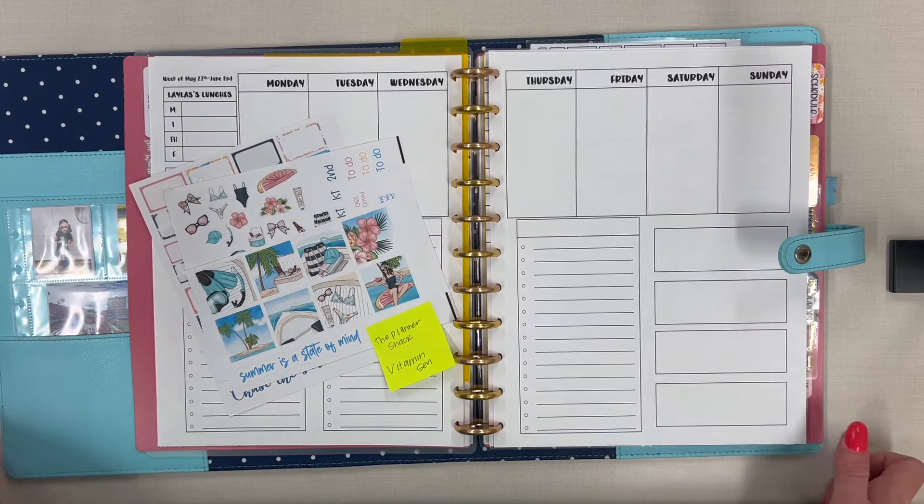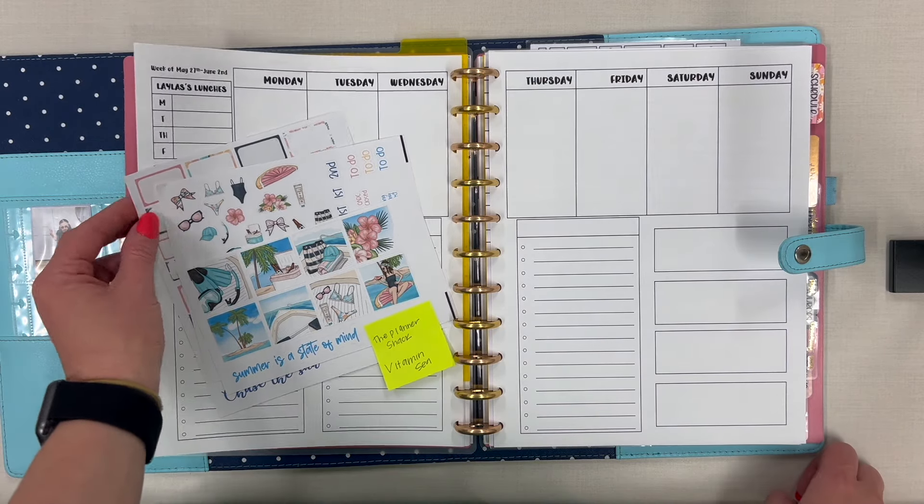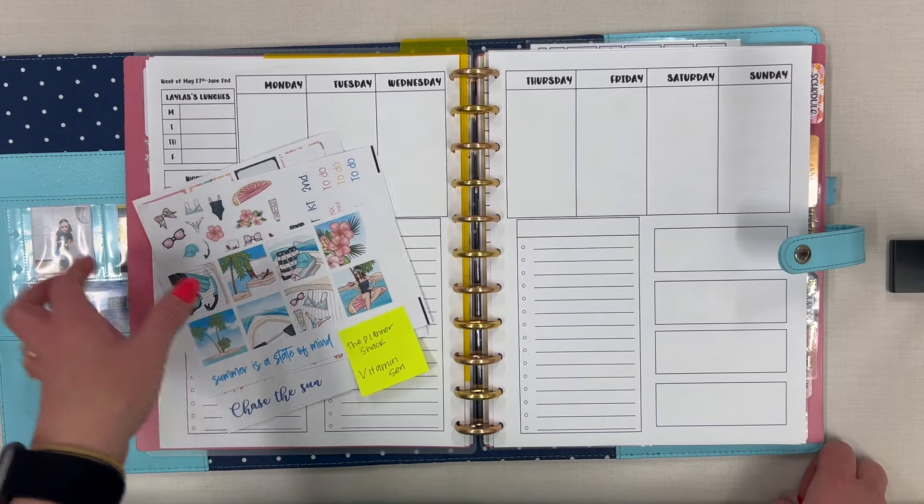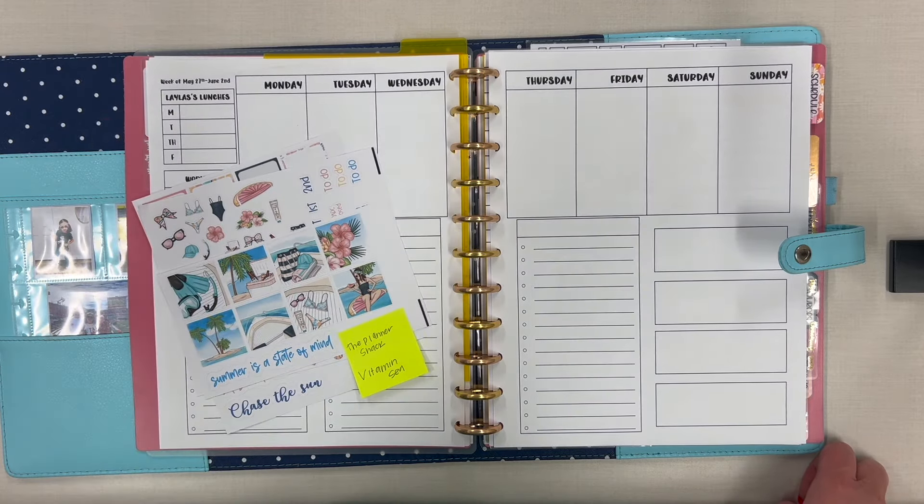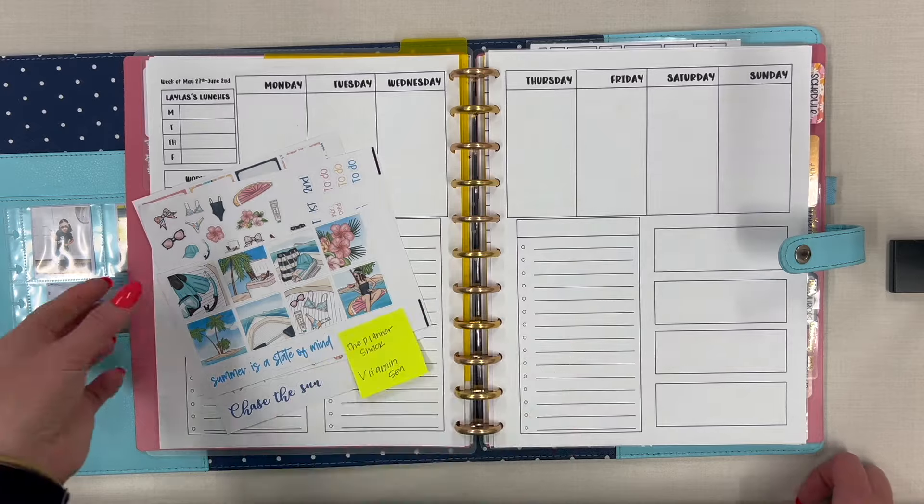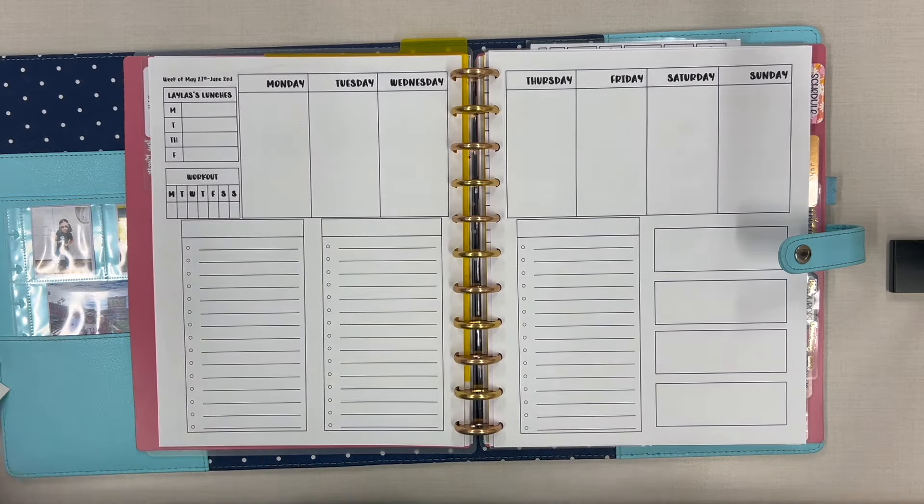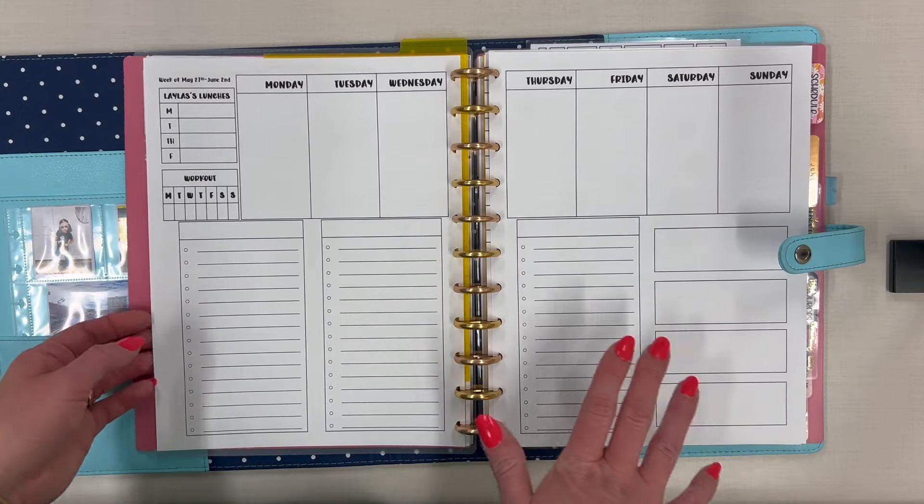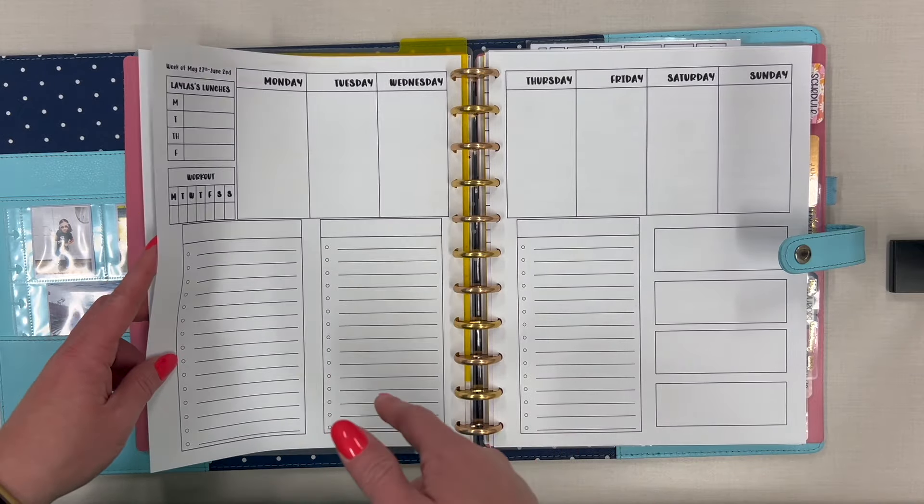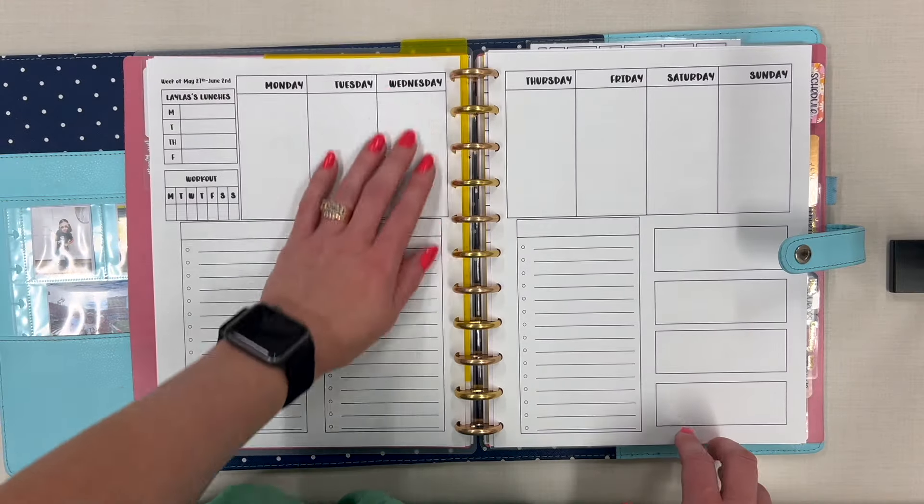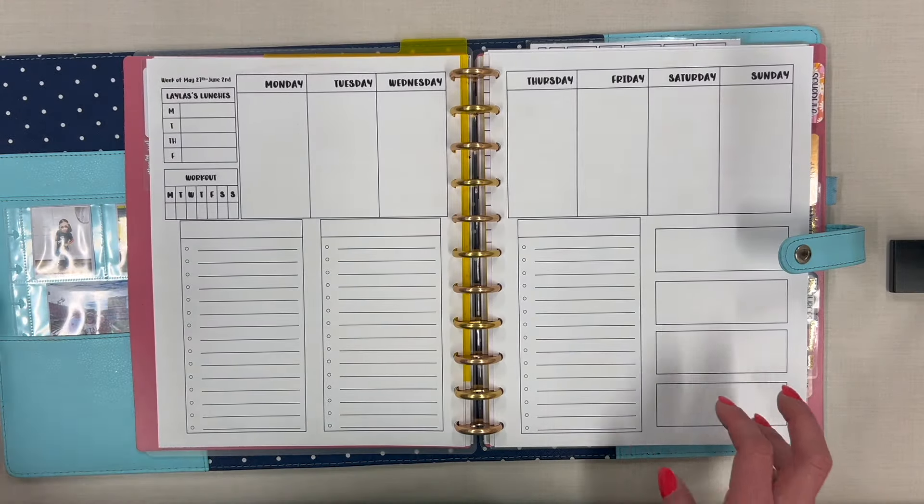Hello friends, welcome to my channel. If you are new, welcome back if you are returning. My name is Keisha and I'm here to plan for Monday May 27th to Sunday June 2nd. This is the last week of school, not the last of my contract but the last week of school for me. Layla actually gets out on Friday. In fact, a couple of these days the daycare is even closed.